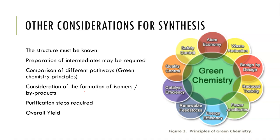As I mentioned, one of the other things that sets apart our pathways is their adherence to green chemistry principles. We need to know the structure and preparation of any intermediates that may be formed. We need to be able to compare different pathways using green chemistry principles, which includes atom economy, reducing waste, reduced toxicity, energy efficiency, renewable feedstocks, and catalyst efficiency. You won't need to list off all 12 principles, but these are the guiding ideas behind better synthetic pathways.